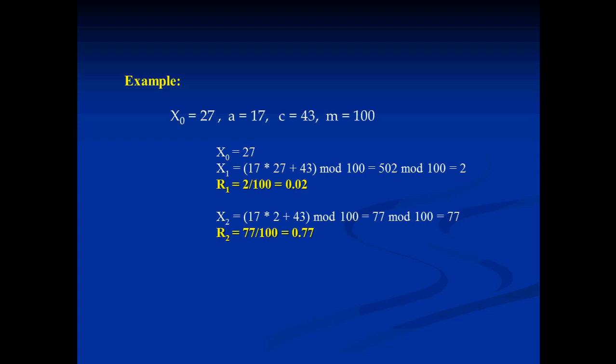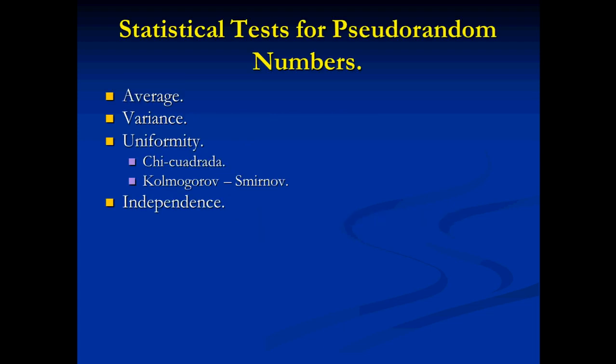These two methods were examples of how to generate random numbers, or as we will call them, pseudo-random numbers. We call these numbers pseudorandom because we are not sure they are truly random. They first have to pass four tests: an average test, a variance test, a uniformity test, and an independence test. If the data passes all four tests, then we can assure that they are random.